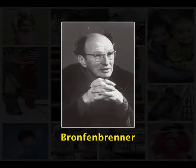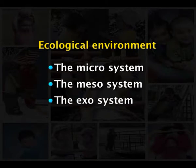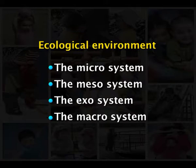Bronfenbrenner used the word ecology to refer to the interactions of the person with his or her social and physical settings. The ecology of human development involves the scientific study of progressive mutual accommodation between an active growing human being and the settings in which the developing person lives. The interaction between the developing person and the environment is viewed as a reciprocal relationship. The ecological environment includes immediate settings such as the home, school, and workplace. It is composed of four structural levels: the microsystem, the mesosystem, the exosystem, and the macrosystem.